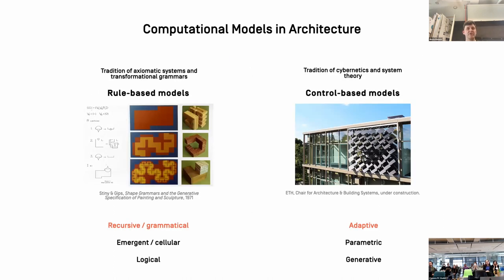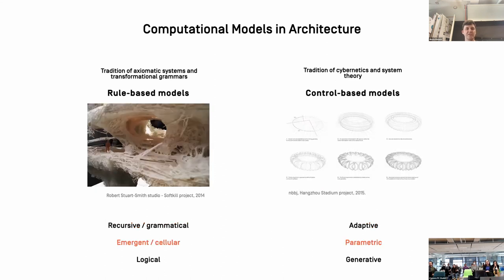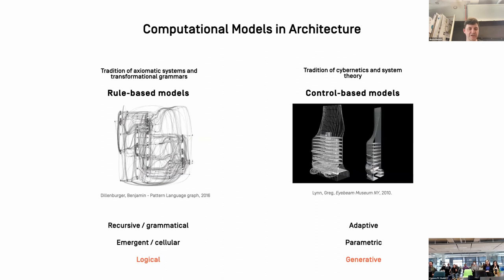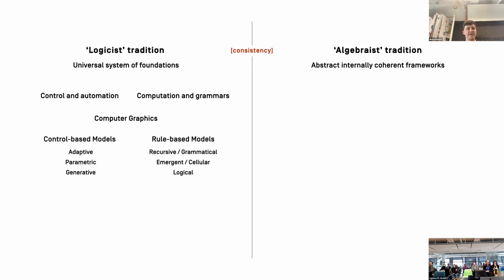CAD systems are not the only ones pertaining to logicism. Most computational models in architecture over the last 50 years also subscribe to either Wiener's legacy of control and automation or Chomsky's legacy of formal grammars. We have recursive and grammatical models that are rule-based, and adaptive models that are control-based; emergent and cellular models that are rule-based, and parametric models that are control-based. Think about Grasshopper sliders — it's a system of control; you are the god with the sliders.